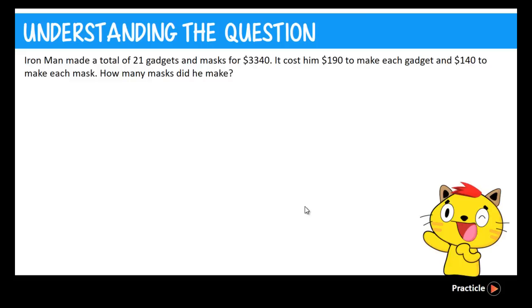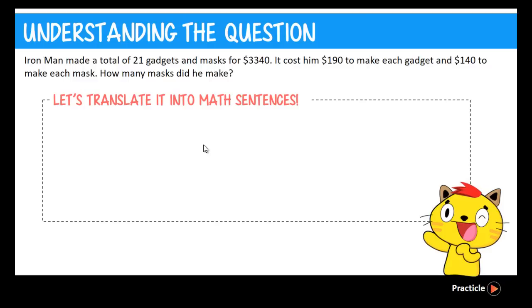When we look at a problem sum, the first tip is don't panic. Although it can sound very complicated, it helps if we break them into small little chunks of info and translate them into different math sentences. I'll show you how we do that. Let's read the first sentence again. Iron Man made a total of 21 gadgets and masks for $3,340. This means the total number of items he made is 21, and it cost him $3,340. So we write that down first. When we continue reading, it says it cost him $190 to make each gadget. By each, it means that every single one of the gadgets cost $190. So we write down what we know again.